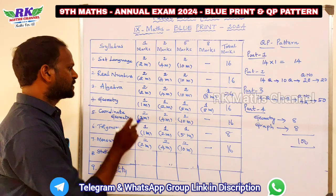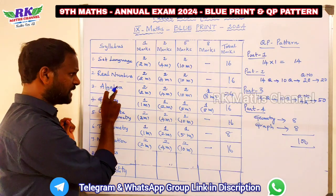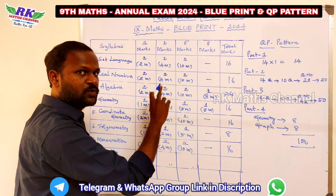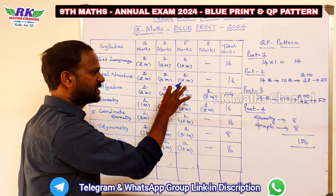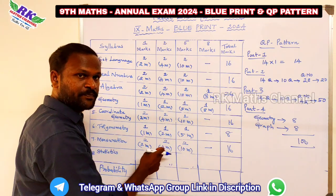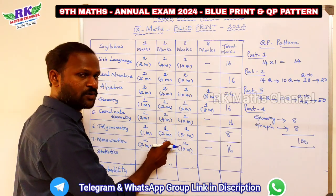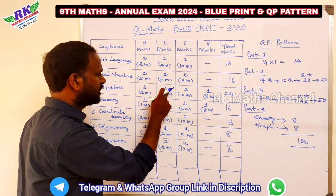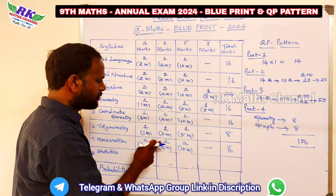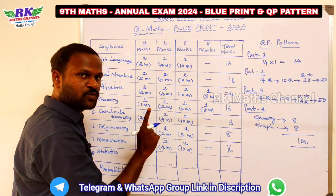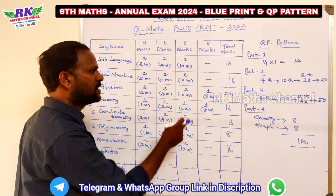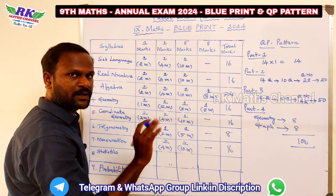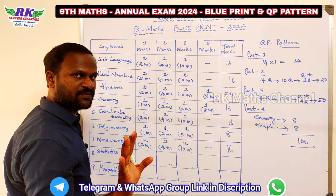For algebra: 2 marks, 5 marks — 3 questions. Algebra carries 2 marks for 3 questions and mensuration carries 1 mark. For 5 marks: 3 marks and mensuration 1 mark. Confirm.